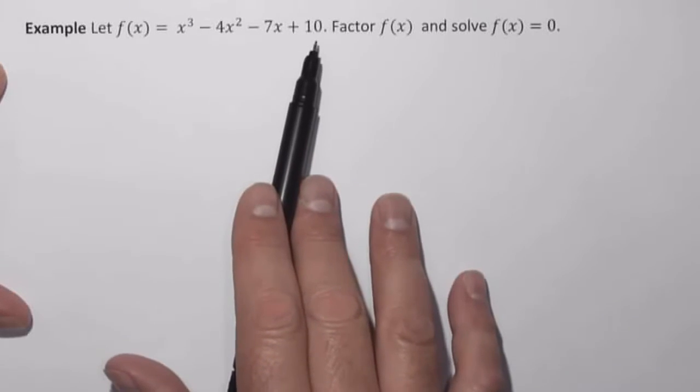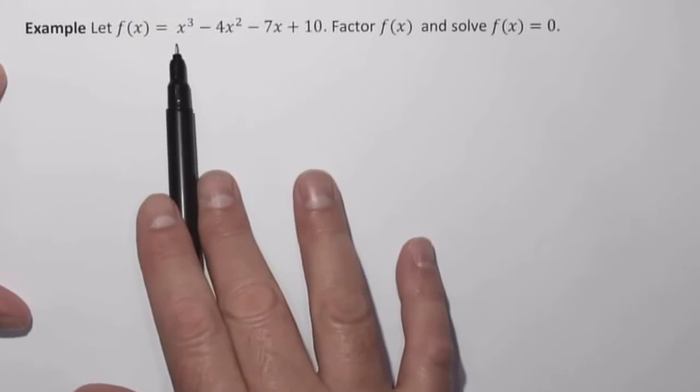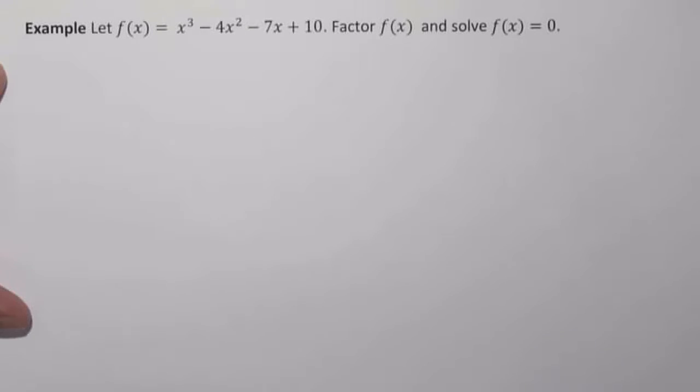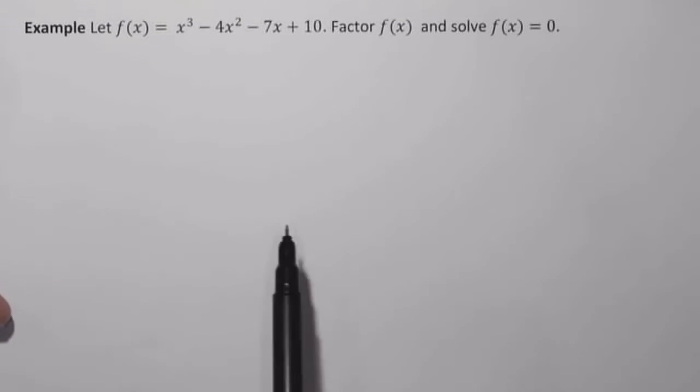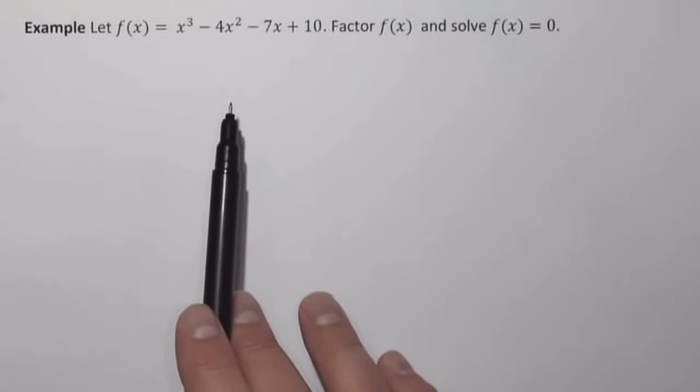And this is where our factor theorem comes in. If I can find any zero of this function, then I will be able to use that as a factor. We'll use that along with either polynomial long division or synthetic division in order to factor this.